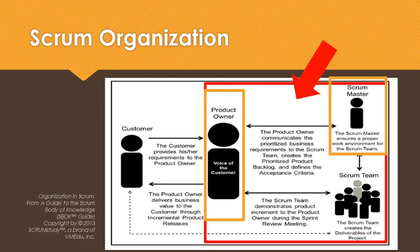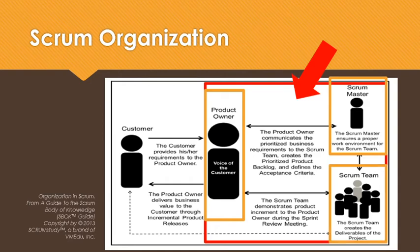The Scrum master is the facilitator who ensures that the Scrum team is provided with an environment conducive to completing the project successfully. The Scrum master guides, facilitates, and teaches Scrum practices to everyone involved in the project, and also clears obstacles for the team, ensuring that Scrum processes are being followed. The Scrum team is the group of people responsible for understanding the requirements specified by the product owner and creating the deliverables of the project.